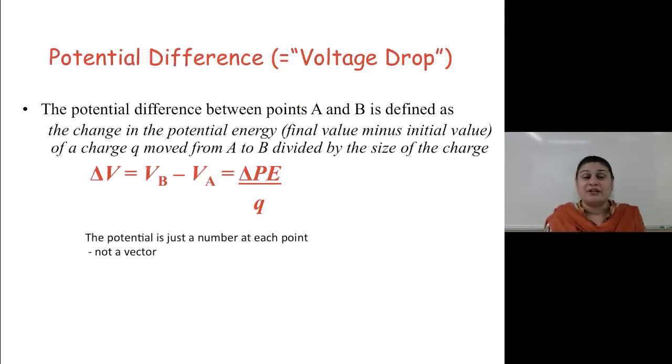Potential difference can also be called the voltage drop. Potential difference between points A and B is defined as the change in potential energy, final value minus initial value, of a charge Q moved from point A to point B, divided by the size of the charge. Remember, potential is just a number at each point. It is not a vector.